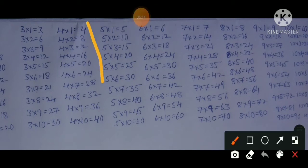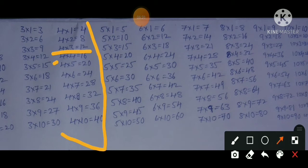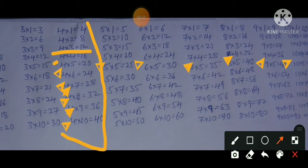Coming to the 4 times table. We already covered up to 4×3=12 in previous tables. So now we learn from 4×4=16 onwards: 4×5=20 and 5×4=20; 4×6=24 and 6×4=24; 4×7=28 and 7×4=28; 4×8=32 and 8×4=32; 4×9=36 and 9×4=36; 4×10=40 and 10×4=40. Finished.